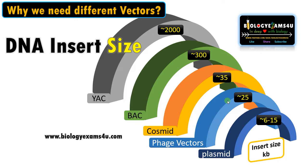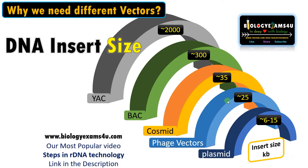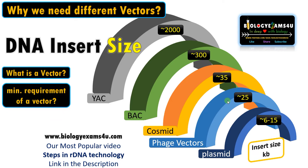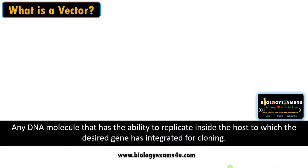Finally we have YAC that can accommodate 2000 kb. So the prime reason for having different types of vectors is to accommodate large DNA fragments for different scientific procedures like genome sequencing. In this video we'll be discussing what is a vector, what are the minimum requirements of a vector, and a brief description of all these vectors. Let's begin with the definition of a vector.